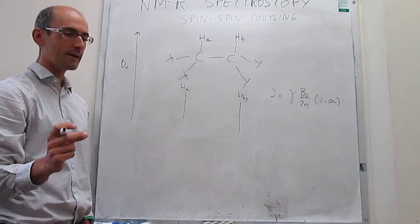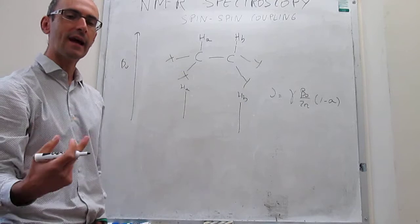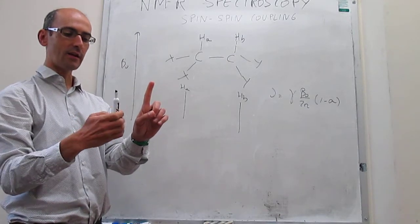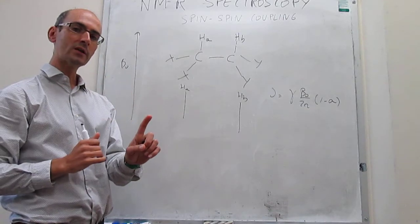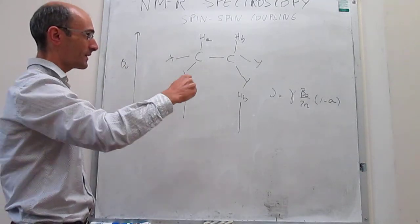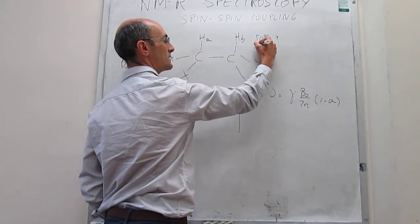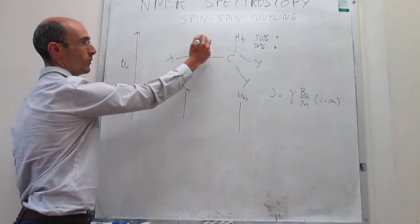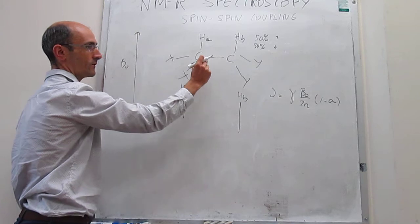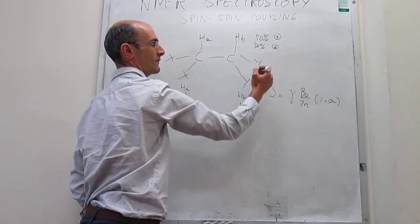In addition to the electronic modulation, the effect that causes splitting of the signal is the fact that HB, which is very close to HA, also has a tiny magnetic field. We know that HB in the presence of the external magnetic field is either precessing and generating a magnetic field towards the field or against the field. About 50% of the HB atoms are going to be pointing towards the field and 50% are going to be pointing against the field.